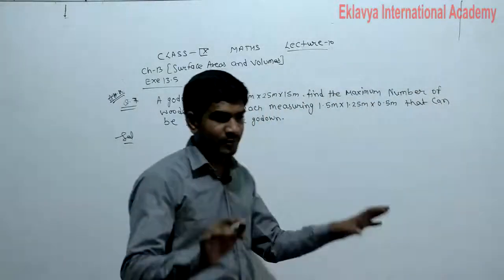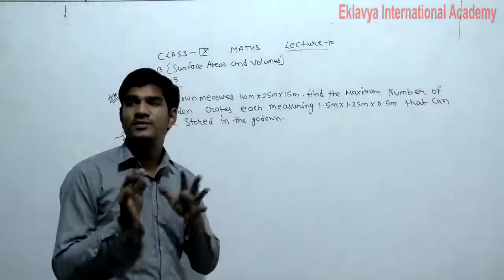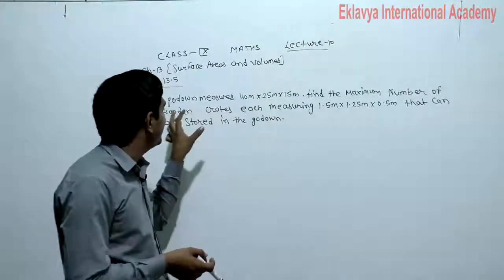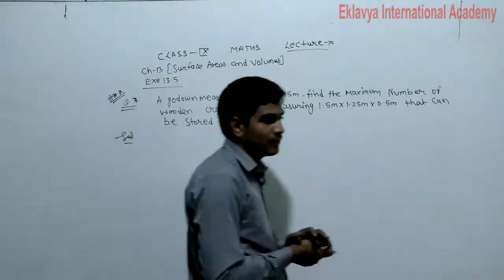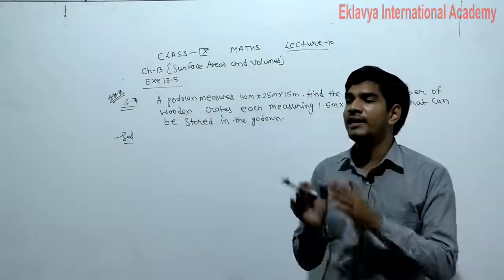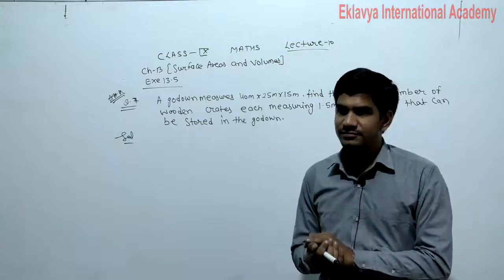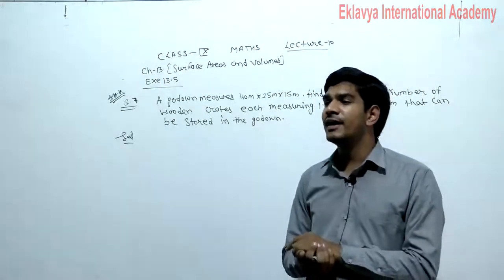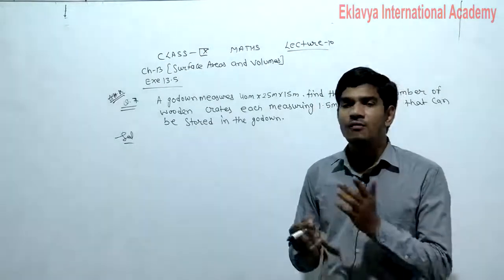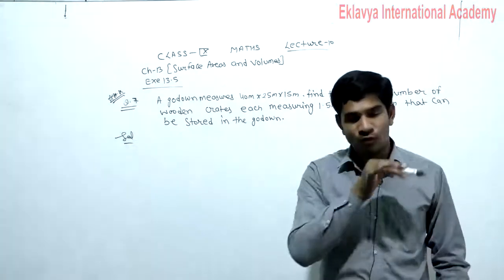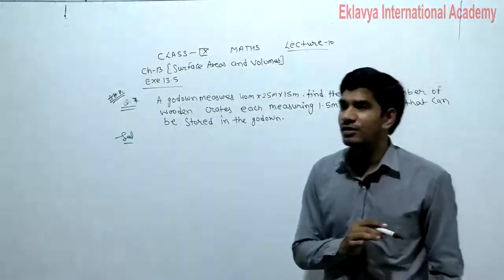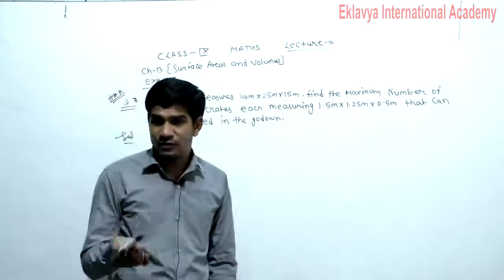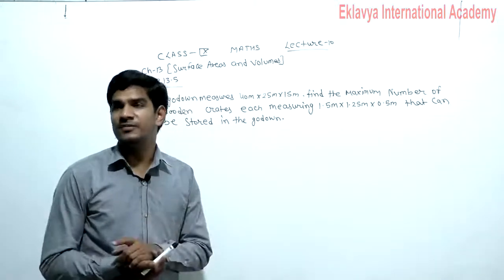Suppose we consider a room in the shape of a godown. We need to find out the maximum number of crates that can be stored. Suppose in that room we put n crates. The concept we will use here is: n multiplied by the volume of one crate is equal to the volume of the godown. So, let the number of crates be n.